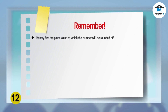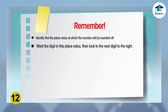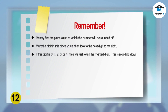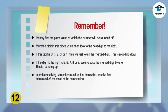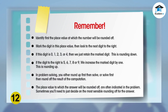Remember! Identify first the place value at which the number will be rounded off. Mark the digit in this place value, then look at the next digit to the right. If this digit is 0, 1, 2, 3, or 4, then we just retain the marked digit — this is rounding down. If the digit to the right is 5, 6, 7, 8, or 9, we increase the marked digit by 1 — this is rounding up. In problem solving, you either round up first then solve, or solve first then round off the result of the computation. The place value to which the answer will be rounded off is often indicated in the problem. Sometimes you'll need to just decide on the most sensible rounding off for the answer.